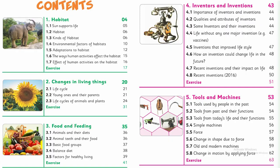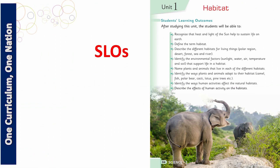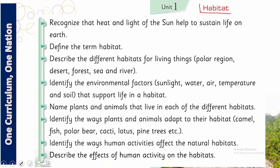My dear students, your Science book consists of five chapters. The first chapter is Habitat, the second is Changes in Living Things, the third is Food and Feeding, the fourth is Inventors and Inventions, and the fifth is Tools and Machines. Your science this year is very interesting — let's open the first chapter, Habitat. I am sure you will enjoy learning these concepts.